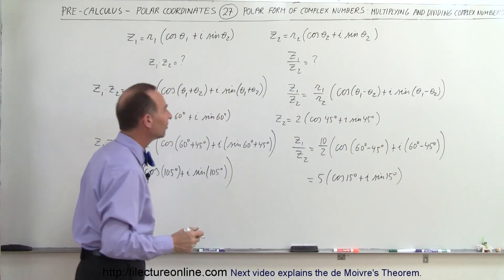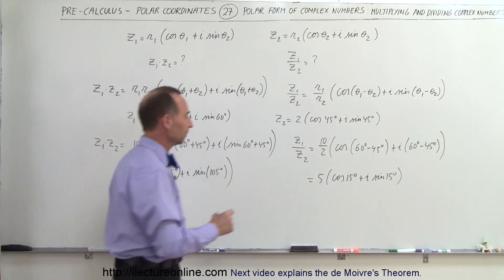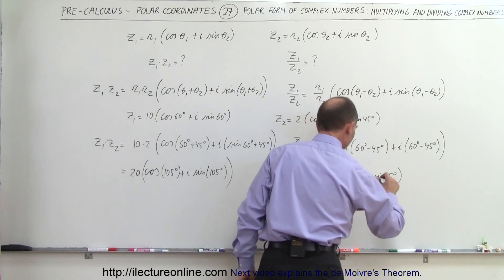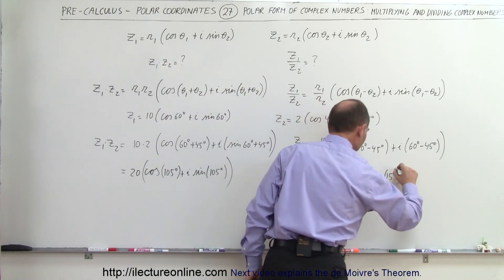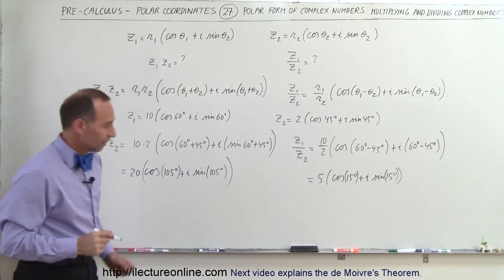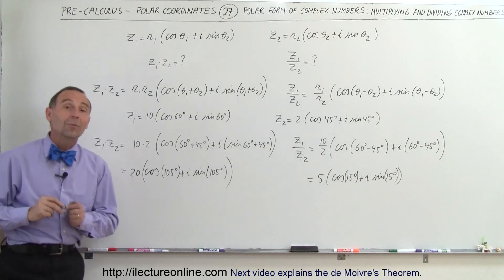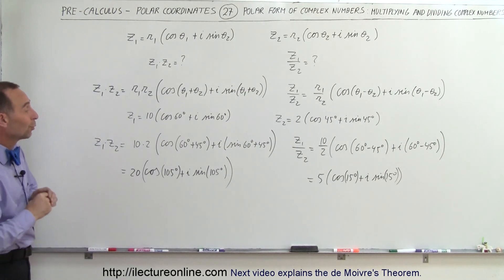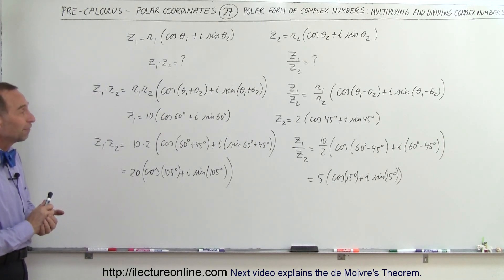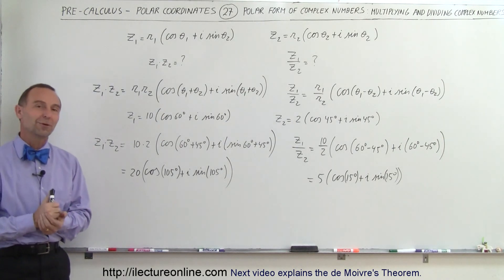You can see that it's really easy to multiply and divide complex numbers when they're in polar form. And that's how we do that — very straightforward.